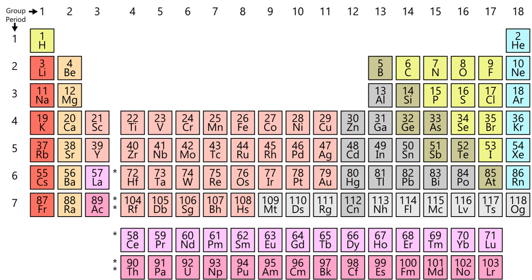According to IUPAC, chemical elements are not proper nouns in English; consequently, the full name of an element is not routinely capitalized in English, even if derived from a proper noun, as in californium and einsteinium. Isotope names of chemical elements are also uncapitalized if written out, for example, carbon-12 or uranium-235. Chemical element symbols, such as Cf for californium and Es for einsteinium, are always capitalized.